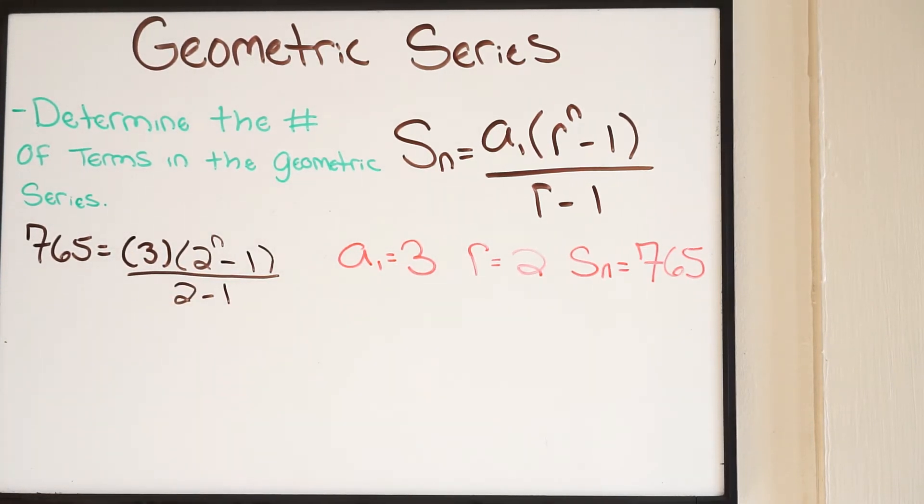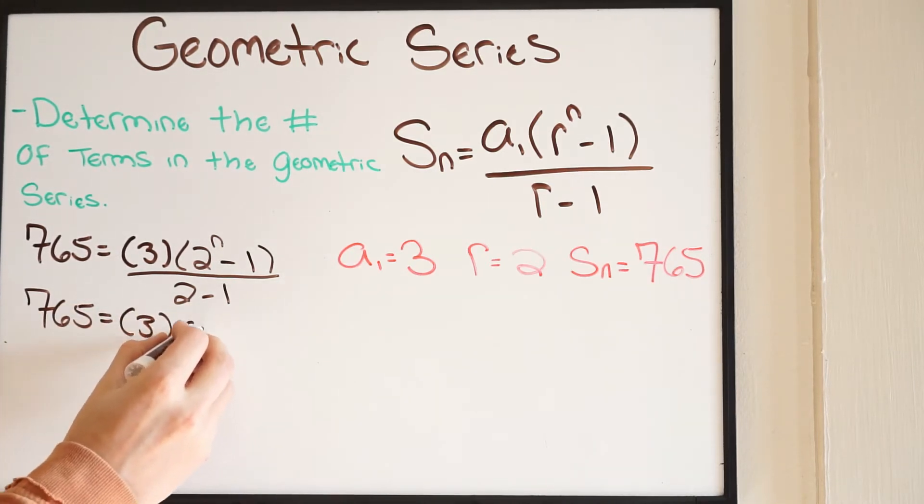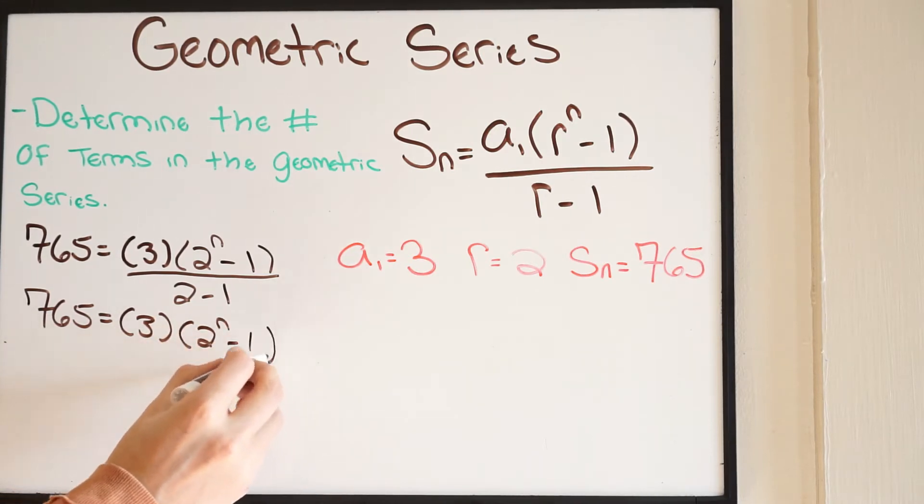Let's go ahead and clean this up. We know that 2 minus 1 is simply going to be 1, and anything divided by 1 is just going to be itself. So we can just go ahead and rewrite this as 765 equal to 3 times 2 to the N minus 1.